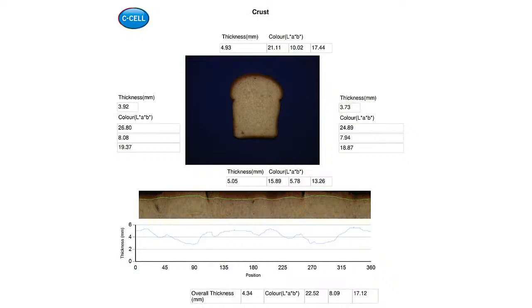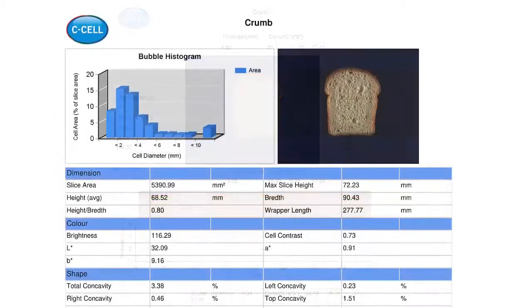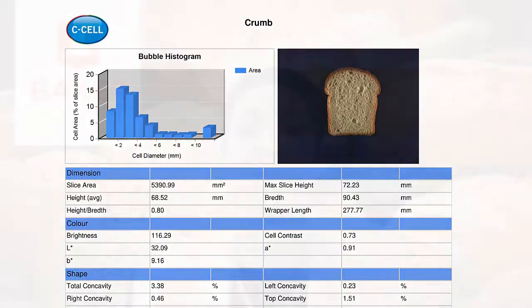The report also provides the dimensions of, for example, a bread slice or a cookie that you're assessing. It will give you an assessment of shape, especially things like symmetry. You can also evaluate the processing that went into it — for example, molding performance via crumb elongation data. And of course, you can look at things like cell size and cell diameter.